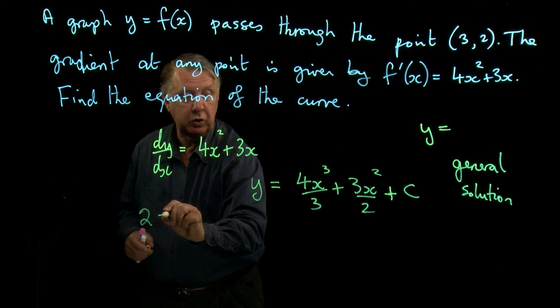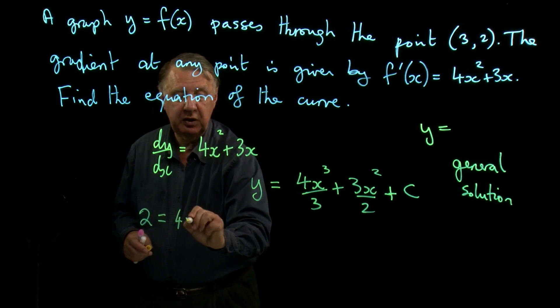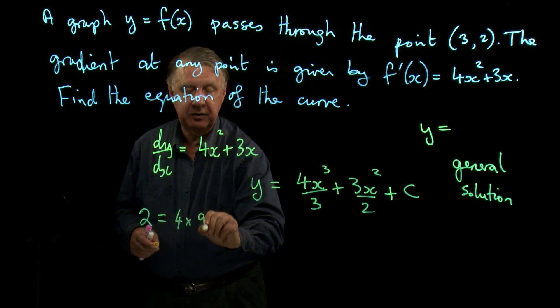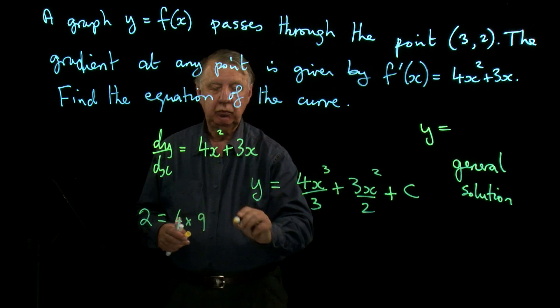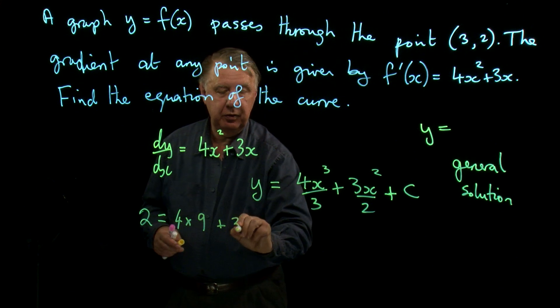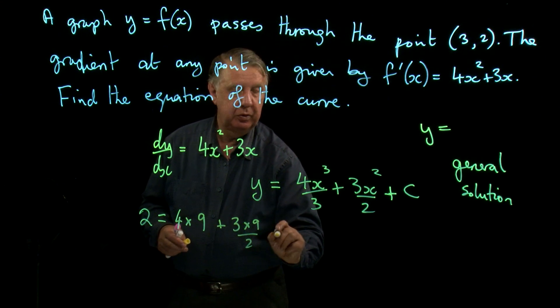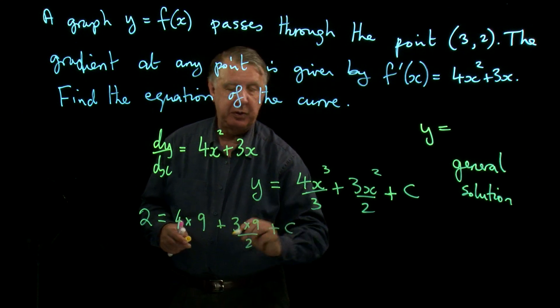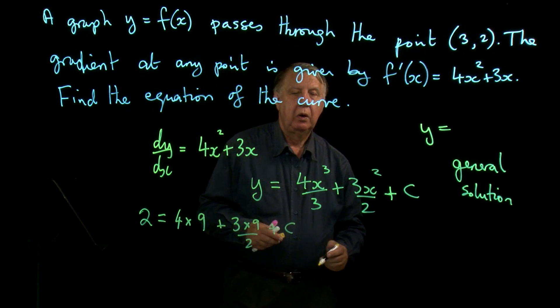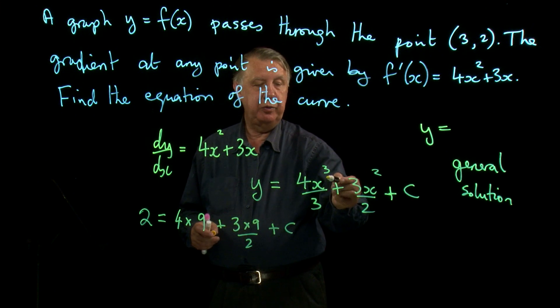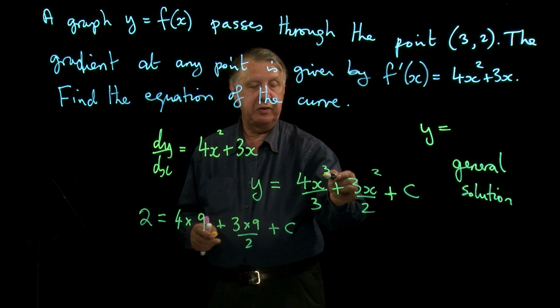So 2 has got to equal 4 times 27 over 3 is 9, plus 3 times 9 over 2 plus c. I think I've got that right. Let's just check this. 3 cubed cancels to 3 squared, which is 9. Yeah, okay.